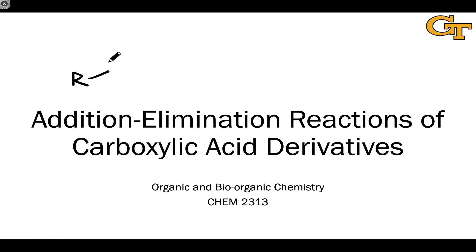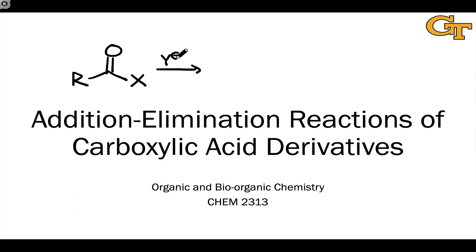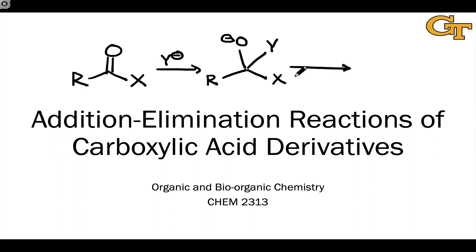In this unit, we're going to be focusing on addition-elimination reactions of carboxylic acid derivatives. We've seen this reaction type before — it's ultimately just nucleophilic acyl substitution. These reactions involve the combination of a carboxylic acid derivative with some kind of nucleophile, denoted as Y minus. This goes through an intermediate in which the carbonyl carbon has become tetrahedral due to the addition of Y, and after elimination of X minus, we end up at a product in which Y has substituted for X.